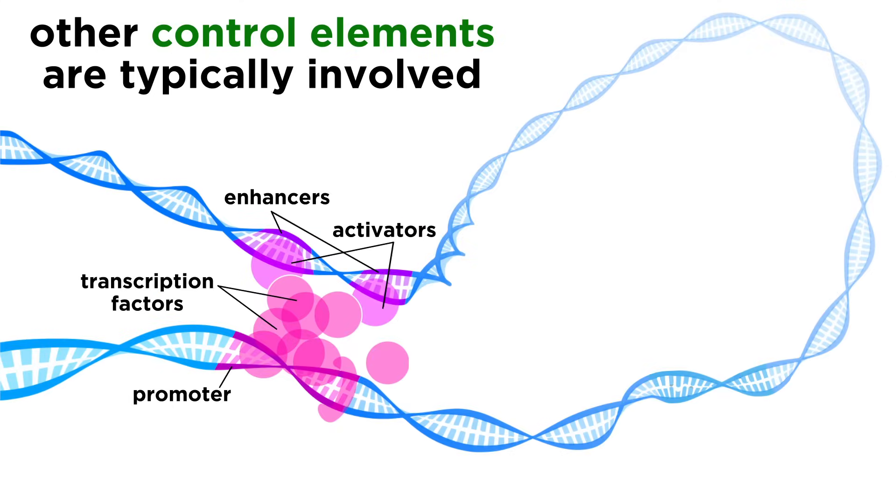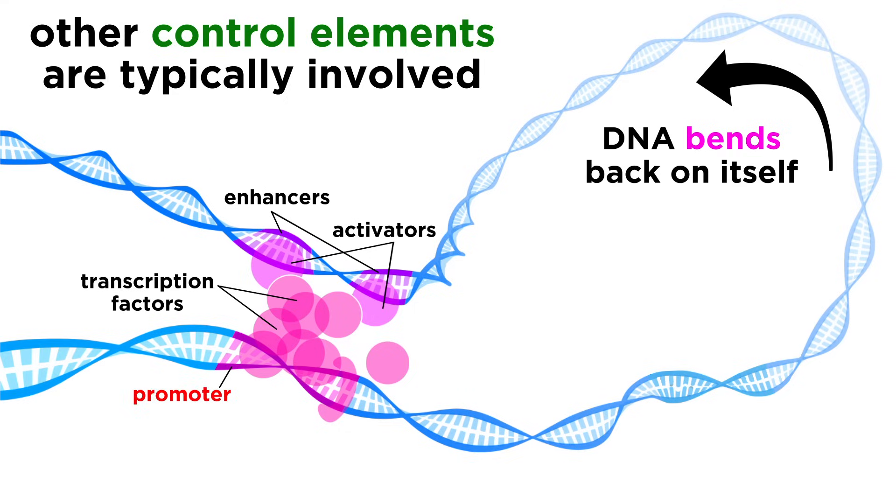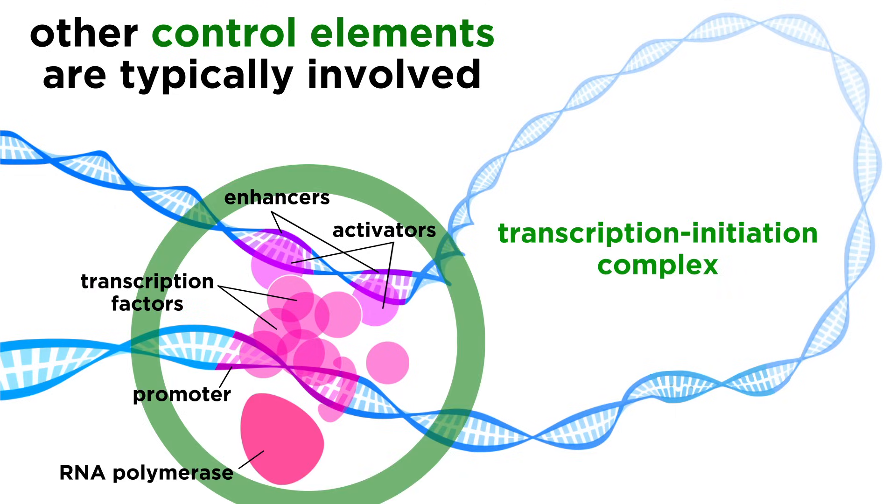In addition, there are other control elements farther away from the gene called enhancers that interact with proteins called activators. When activators bind to the enhancer, another protein can bend DNA to bring the activators closer to the promoter where the transcription factor can be found. Other proteins mediate interactions that produce the complete transcription initiation complex, which allows RNA polymerase to do its job.